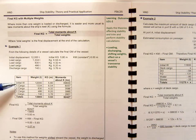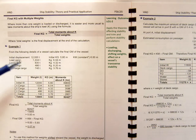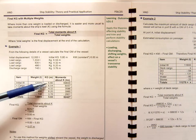When we draw up the table, the first value you must always put in without exception is your initial displacement. Put that in straight away: 12,000, and our initial centre of gravity, our KG, is 5.8.